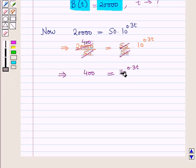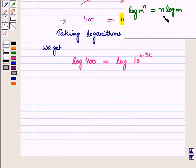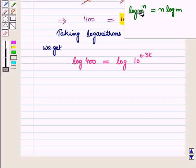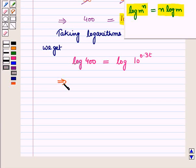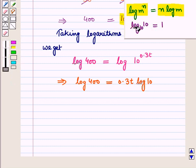Since the base is 10, it is convenient to take common logarithms on both sides. Taking logarithms on both sides we get log 400 = log(10 raised to power 0.3T). Using the logarithm property that log(m raised to power n) = n·log m, we have log 400 = 0.3T · log 10. Also, log 10 to the base 10 is equal to 1.